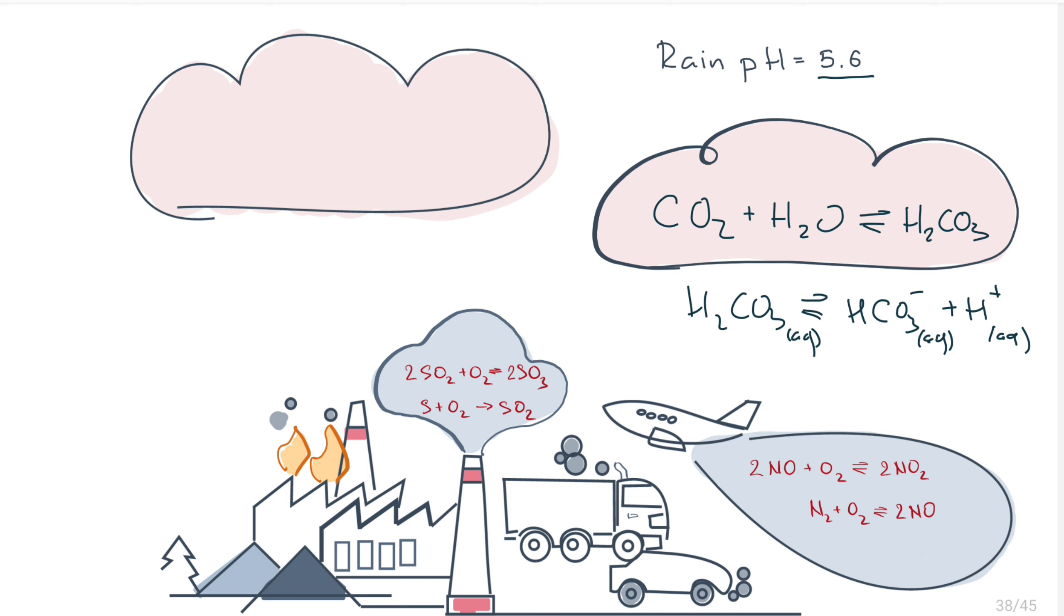The combustion of fossil fuels, internal car engines, and industrial processes increase the concentration and emission of sulfur dioxide, nitrogen monoxide, sulfur trioxide, and nitrogen dioxide to the atmosphere.